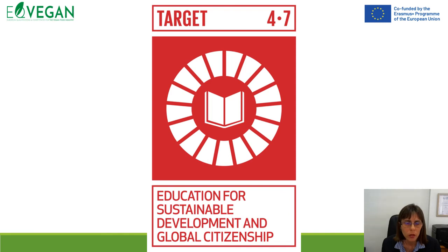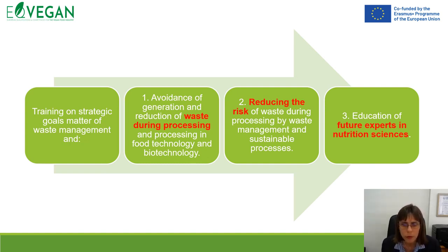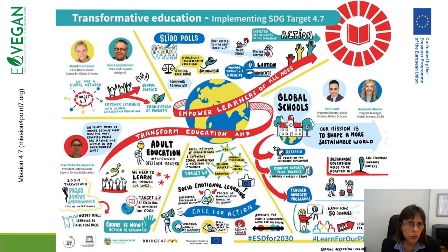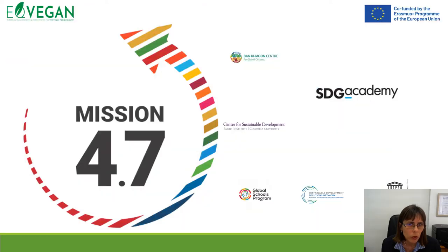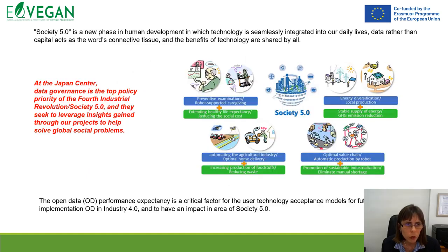Future efforts need to focus on target 4.7 — education for sustainable development and global citizenship. The aim is to have strategic goals and think about waste management, with reduction of waste during processing and reducing the risk of waste through sustainable processes. Education of future experts in food production and nutrition science is key, transforming education towards implementing sustainable development goals. We also need to think about Industry 4.0 and 5.0, with strategies to monitor waste and industrial upcycling.